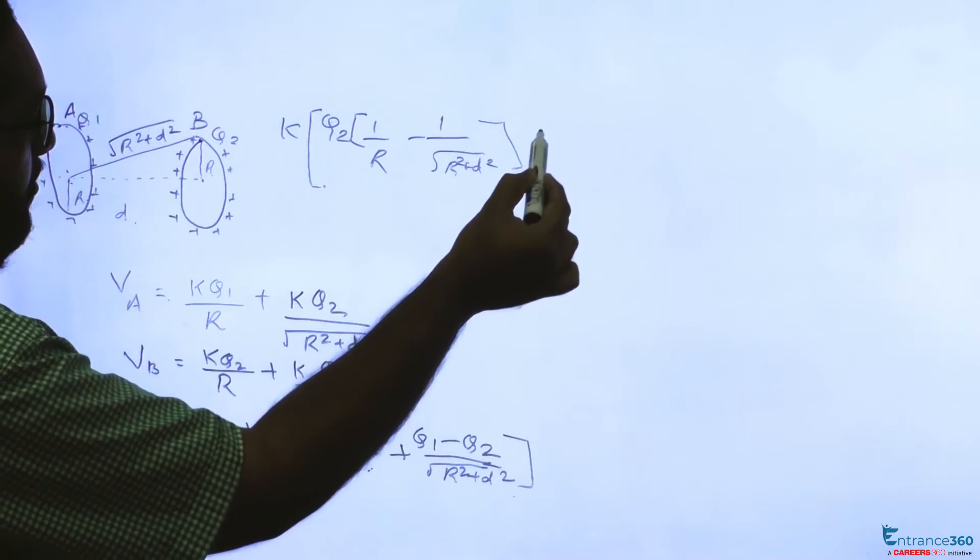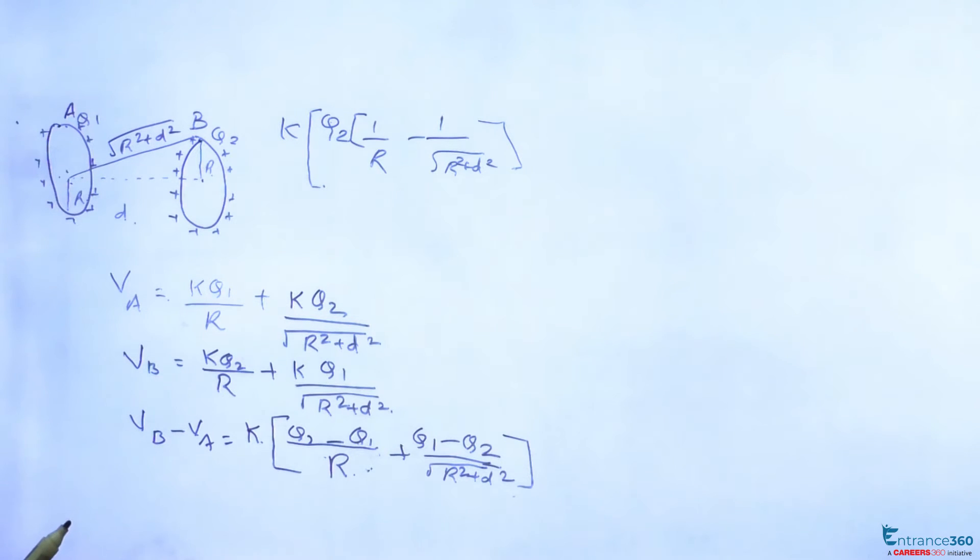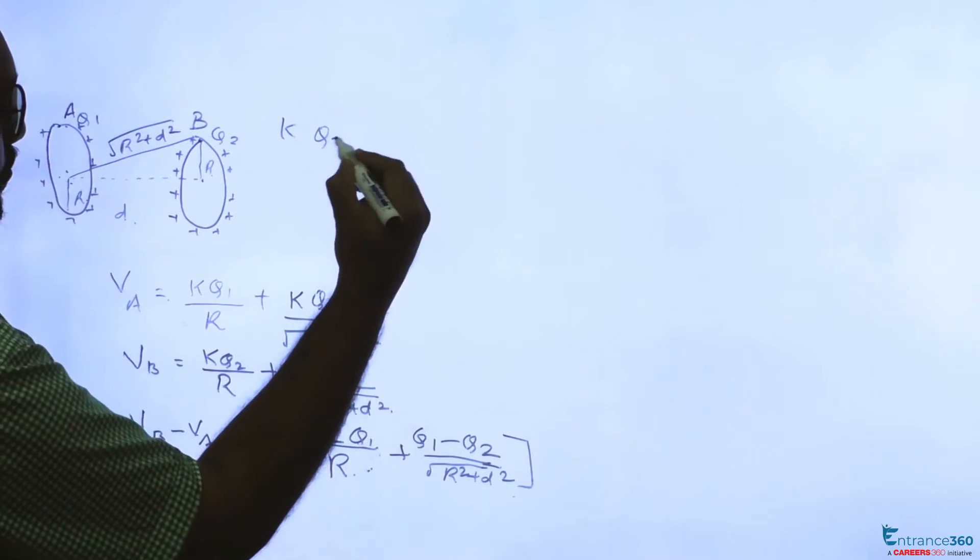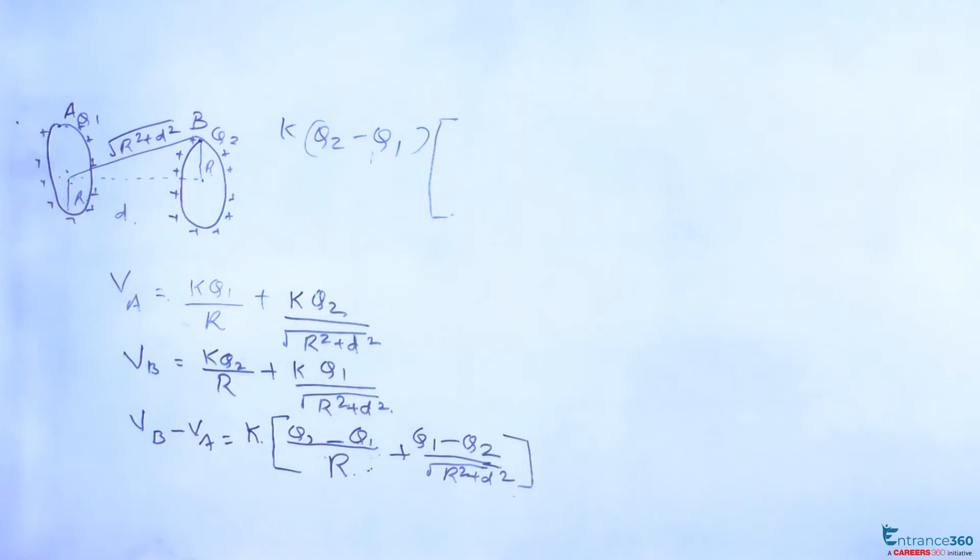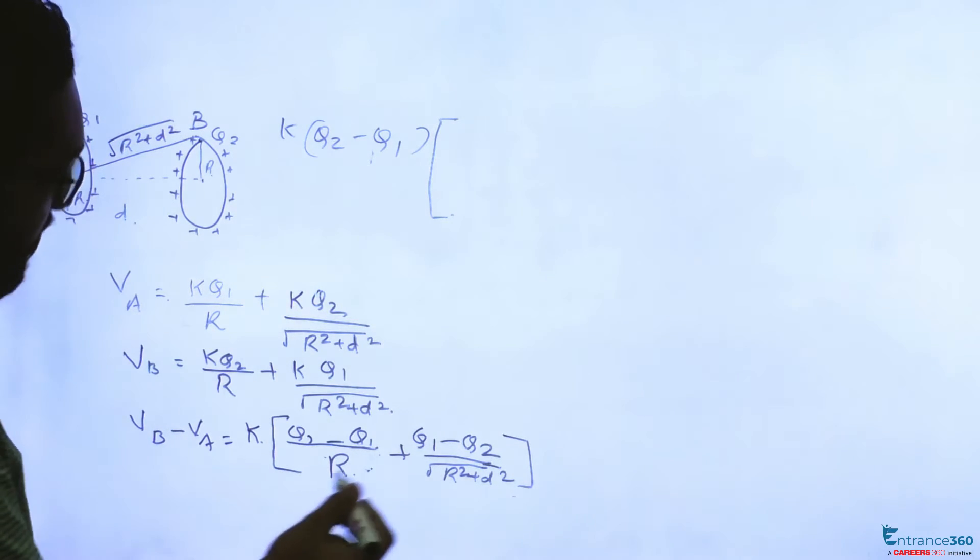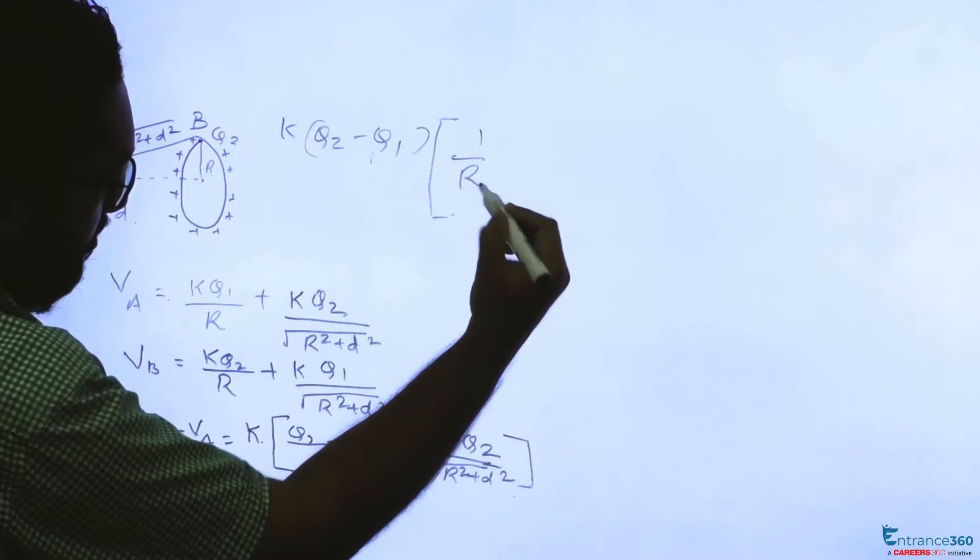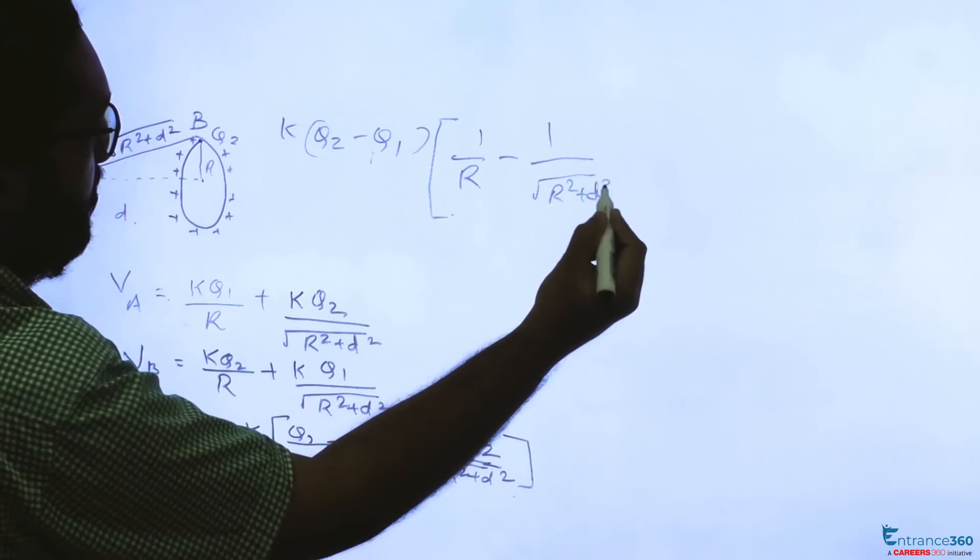Similarly we can write for Q1 also. Or better take Q2 minus Q1 outside and simplify. Because our option is something like that, that's why I am simplifying like this. So K Q2 minus Q1, 1 by R, if we take Q2 minus Q1 it will become minus 1 by root of R square plus D square.